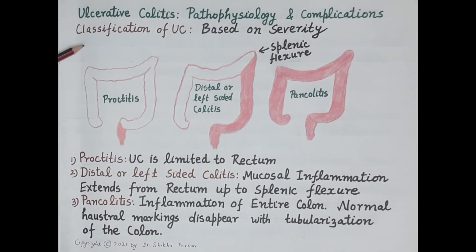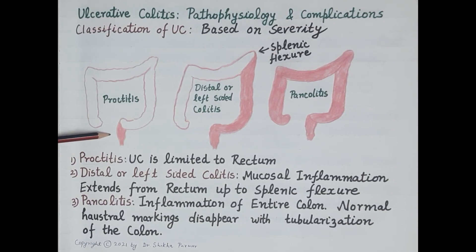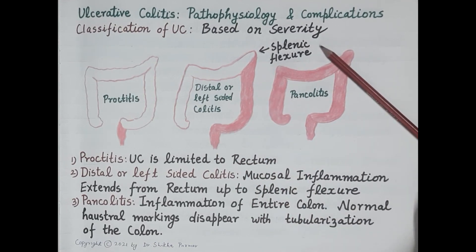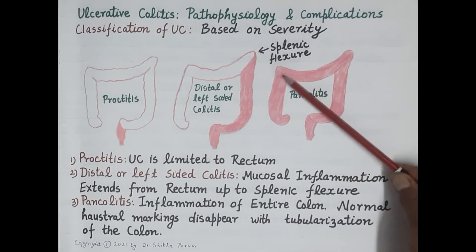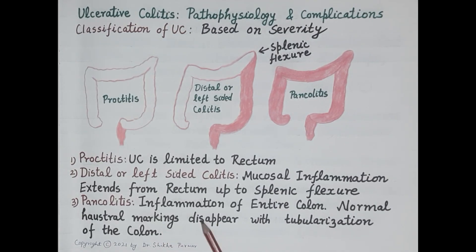Ulcerative colitis is classified based on severity. First, proctitis — where inflammation is limited to the rectum. Second, distal or left-sided colitis — where mucosal inflammation extends from the rectum proximally up to the splenic flexure. Third, pancolitis — where inflammation spreads throughout the entire colon, the normal haustral markings disappear, and the colon looks like a smooth tube, a process called tubularization.